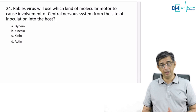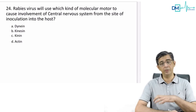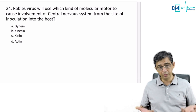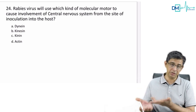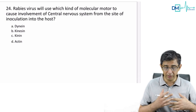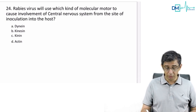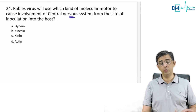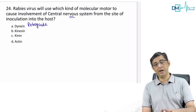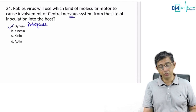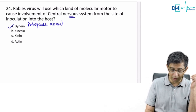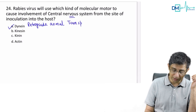A question about rabies virus: a dog bit a person on the arm, and the virus spreads retrogradely to the spinal cord and then to the brain. The question asks which molecular motor is used. In axons, anterograde transport uses kinesin and retrograde transport uses dynein. Since rabies (and tetanus toxin) spreads retrogradely, the answer is dynein. The question was framed physiologically rather than simply asking about retrograde axonal transport.